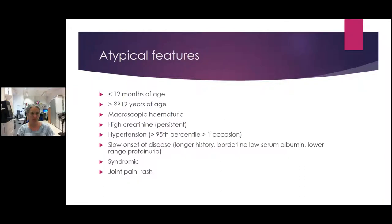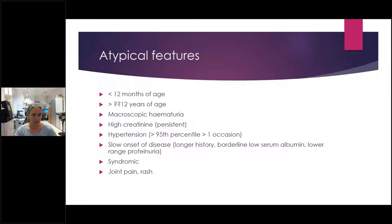The really important atypical features include age. If they're less than 12 months, you should strongly consider whether something else is causing the nephrotic syndrome. The upper limit is slightly more grey — we've had teenagers respond like idiopathic nephrotic syndrome, and some younger children that don't. We tend to use 12 as our upper age limit, though some places use 10.